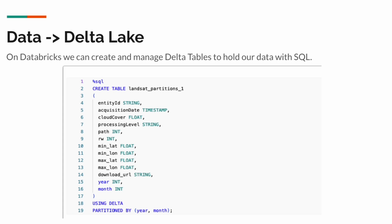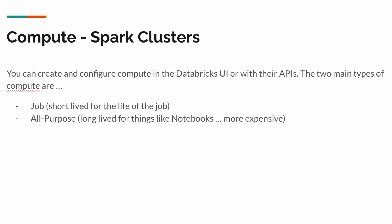When it comes to compute at Databricks, you basically have two options for Spark clusters. First are job clusters, which are short-lived — they last for the lifetime of a job, they're cheaper, and once a job's finished, that compute goes away.